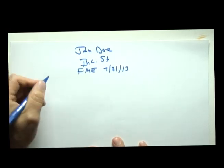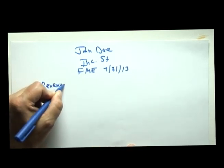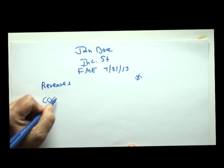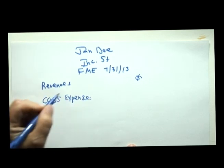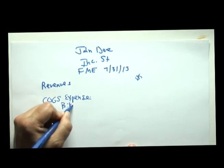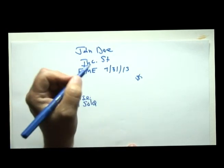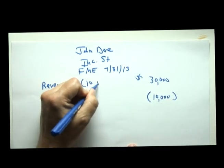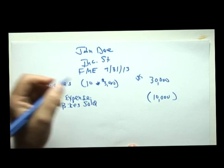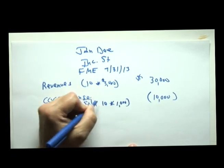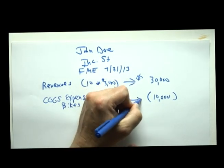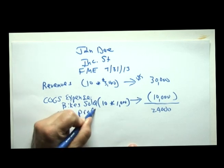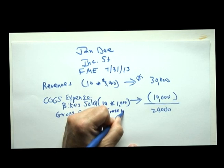This formal statement will be issued to bankers, investors, or the government when preparing a tax return. The income statement always starts with revenues and subtracts out its number one expense — for a company that sells goods at retail, that will be cost of bikes sold. We sold 10 bikes at $3,000 each for revenues of $30,000, and cost of bikes sold was 10 at $1,000 each, so $10,000. The resultant number is called gross profit, sometimes also called gross margin.